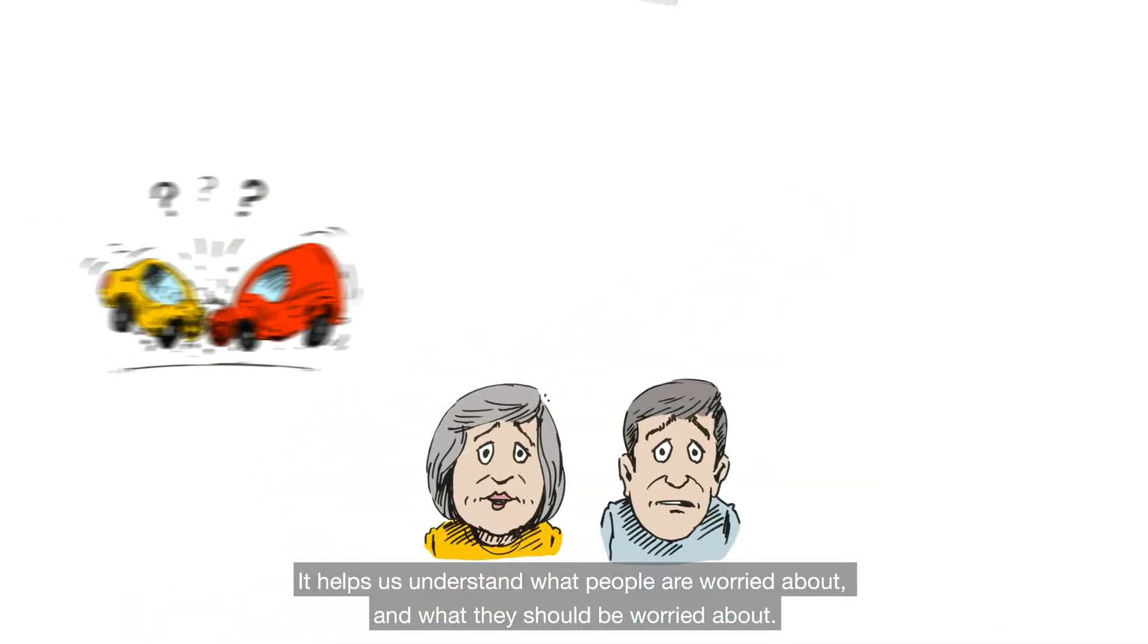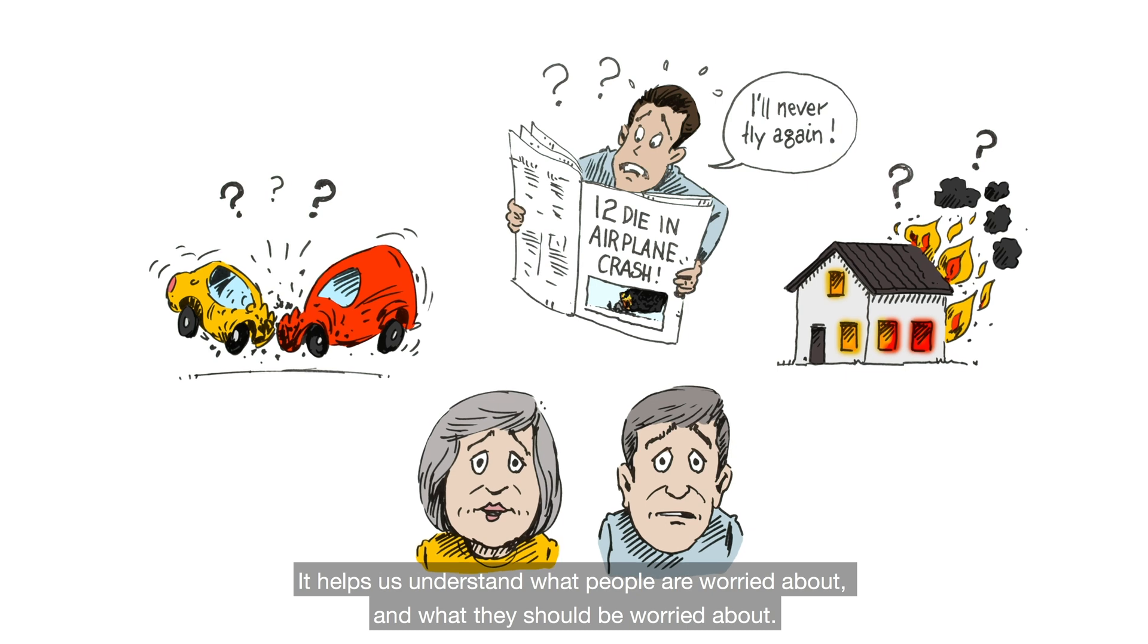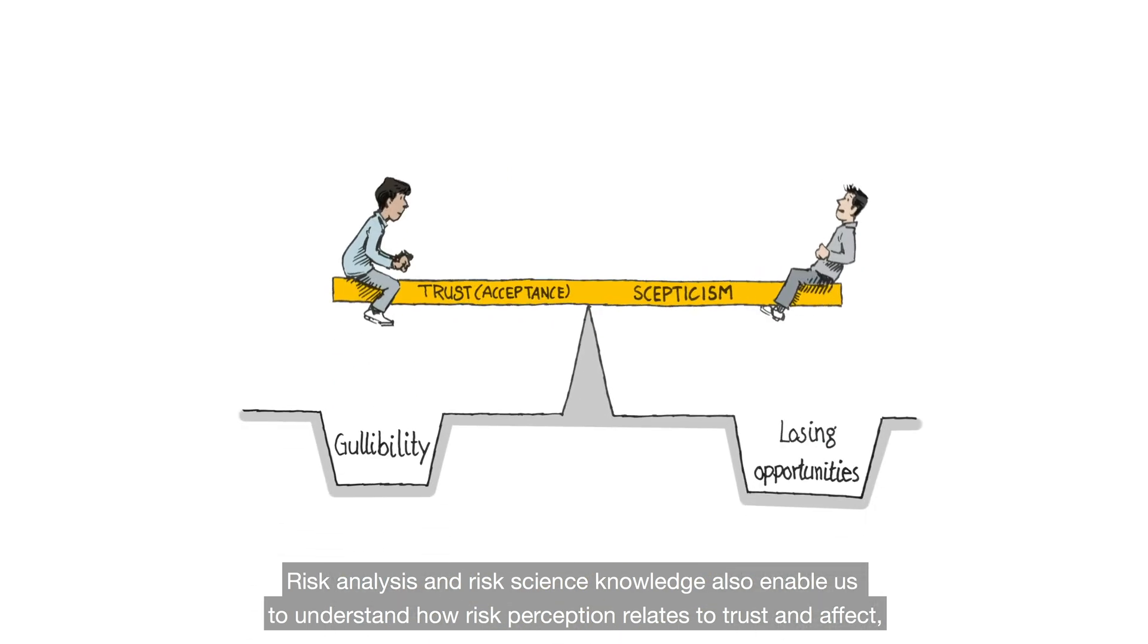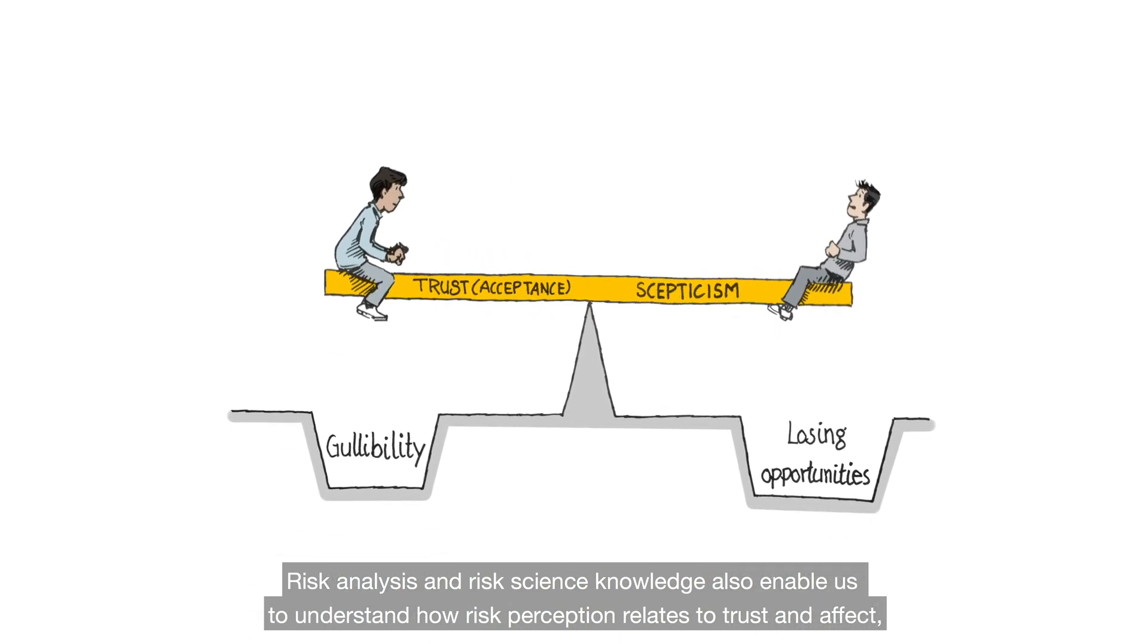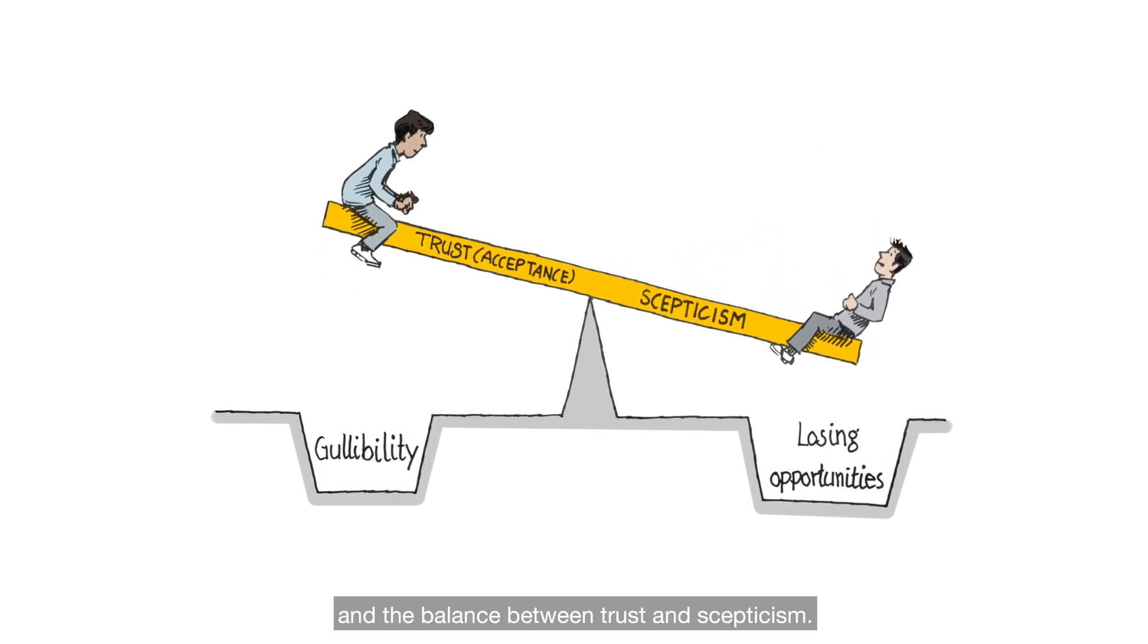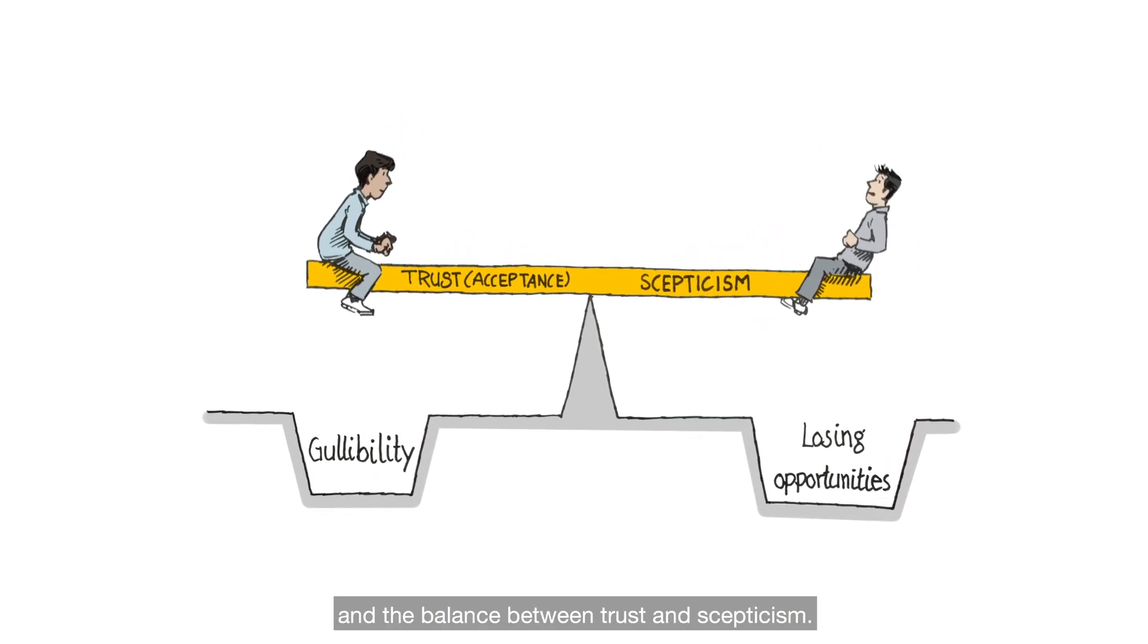It helps us understand what people are worried about, and what they should be worried about. Risk analysis and risk science knowledge also enable us to understand how risk perception relates to trust and affect, and the balance between trust and skepticism.